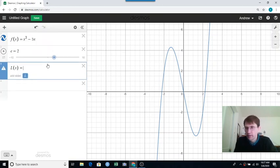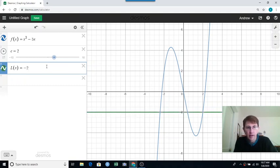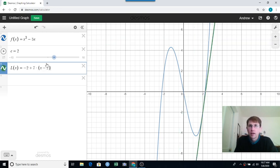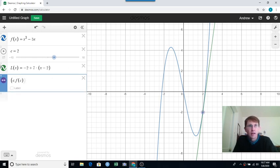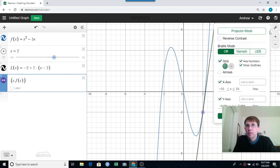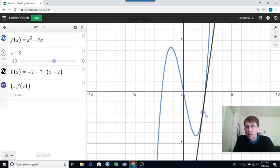And I can say l(x) equals, and I'll just type the formula I got with my by-hand work, -2 + 7(x - 2). And we'll plot the point c comma f(c), and let's turn this black, and maybe make it thicker. So did I end up with a line that is actually tangent to the function at c = 2, x = 2? Yeah, it looks pretty good to me. So then I'll switch back to paper and pencil and write that down.